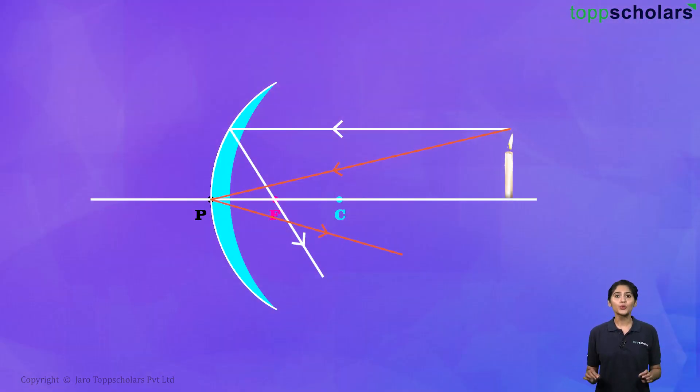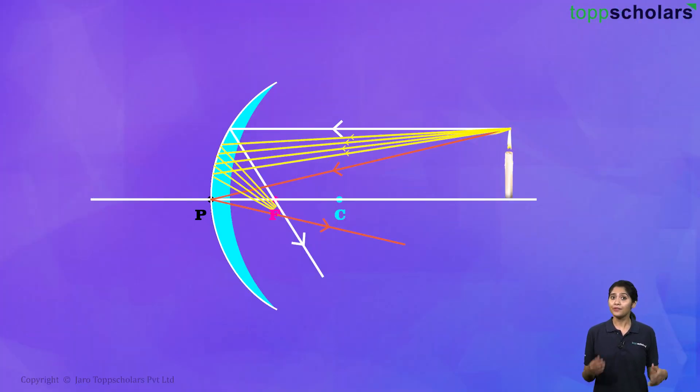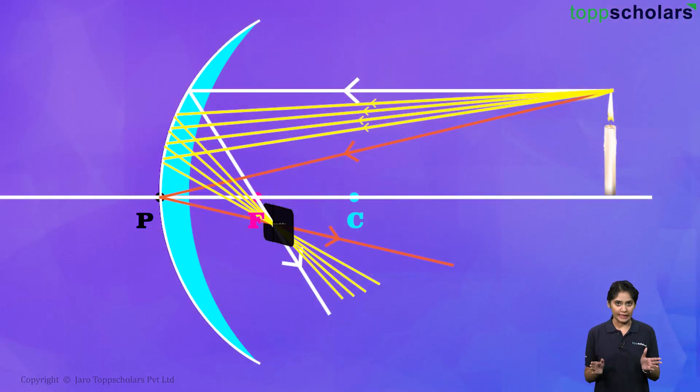Thus, the two incident rays after reflection intersect at this point. In fact, if we were to draw more incident rays, then it would look a lot like this. Here you will notice that all those rays are focused at this particular point. If we put a screen right at this point, we will see a sharp image over here. But at any other place, the rays won't meet and the image will be blurred.